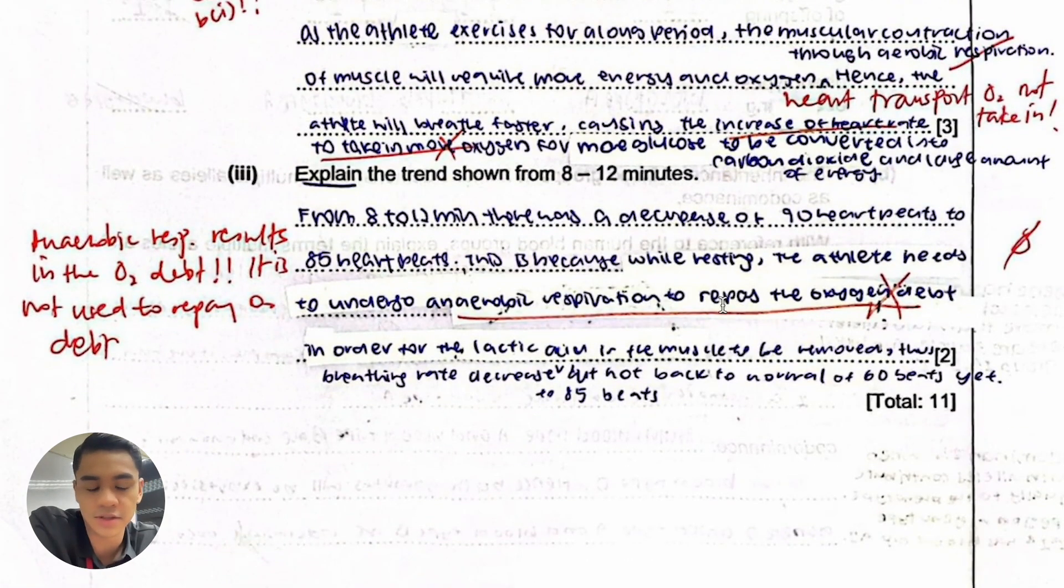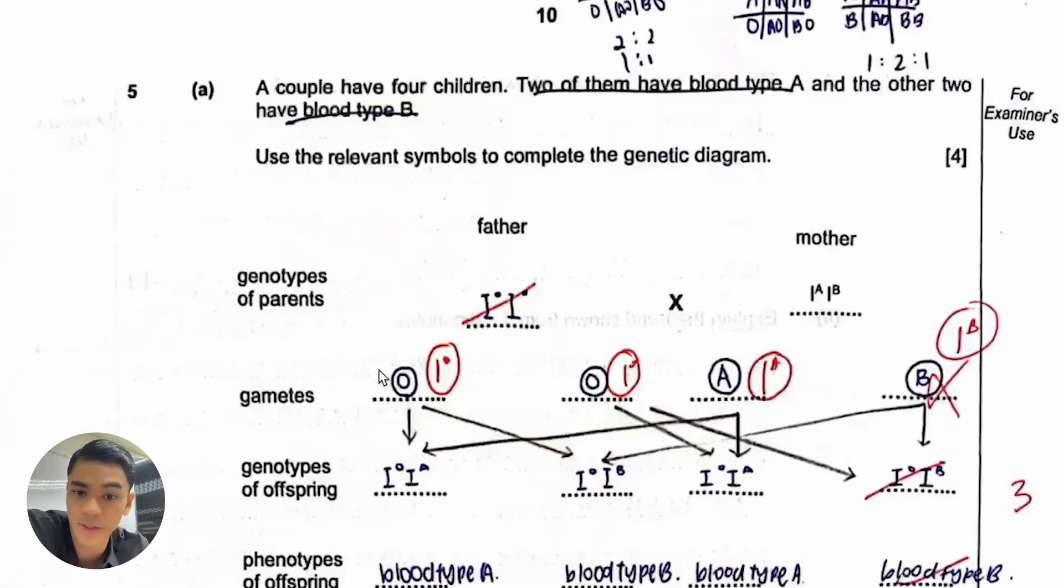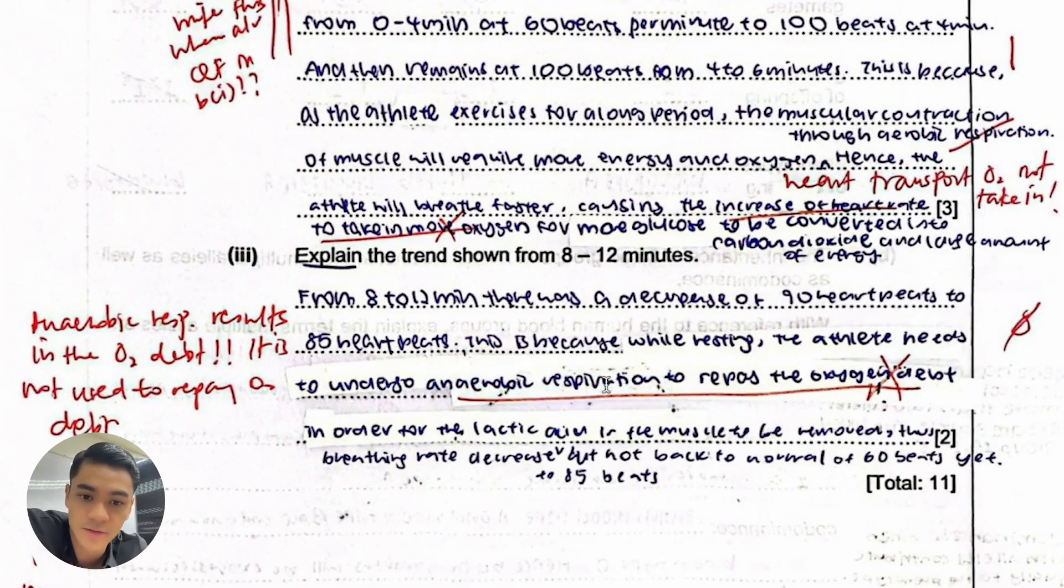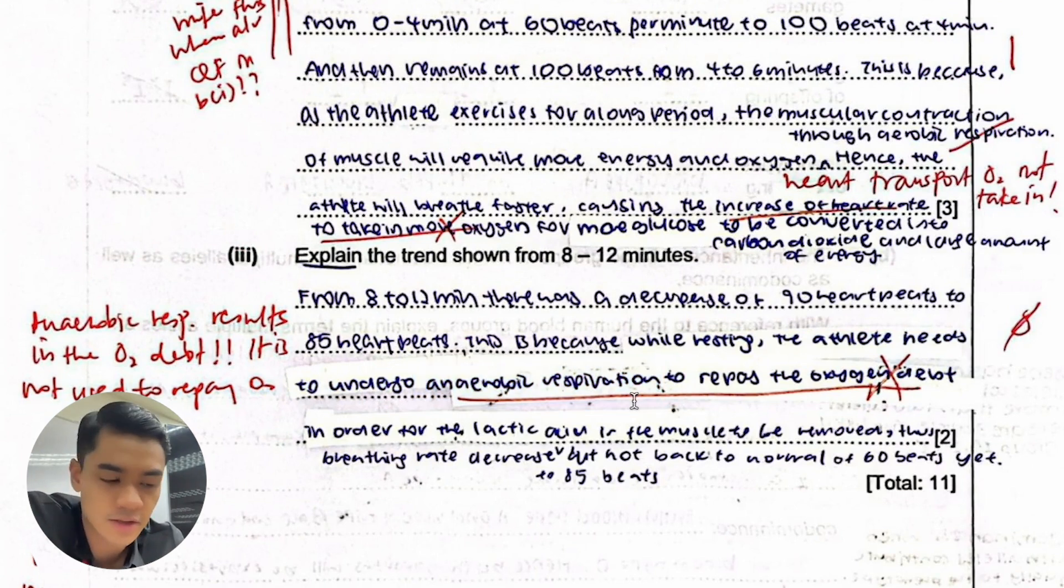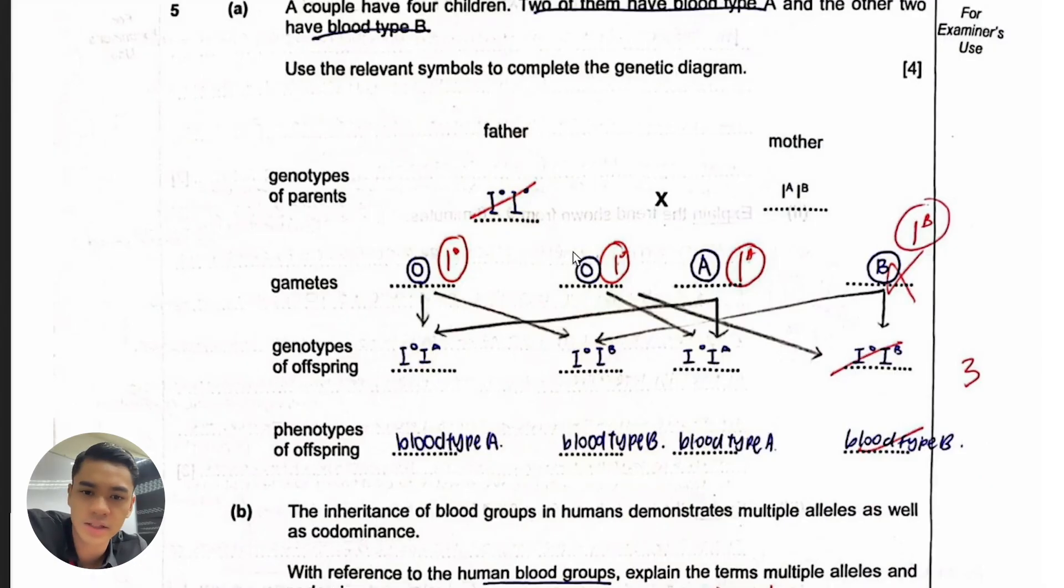Why is it not back yet at 60 would be due to the oxygen debt explanation. I would say blood still needs to be pumped quickly around the body to remove lactic acid from muscles, transported to the liver where it can be removed from the body. Also oxygen demand is not completely back at resting levels because of the oxygen debt that needs to be repaid. That oxygen is required to remove lactic acid at the liver. The mistake here was saying anaerobic respiration to repay, no it's aerobic actually.